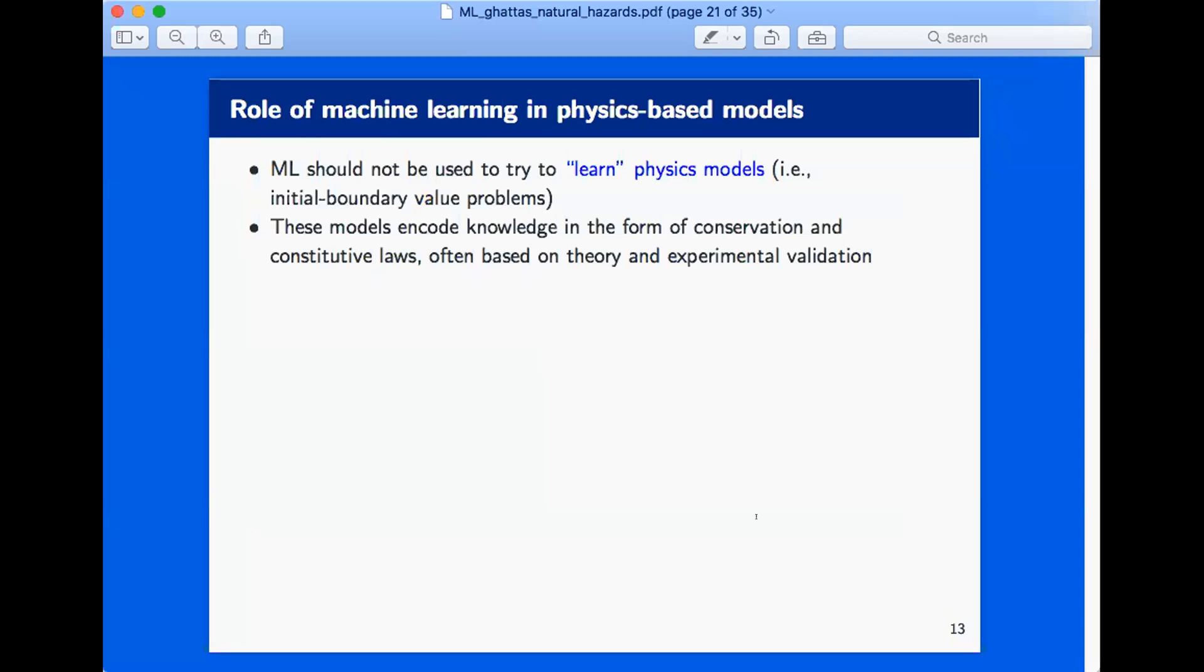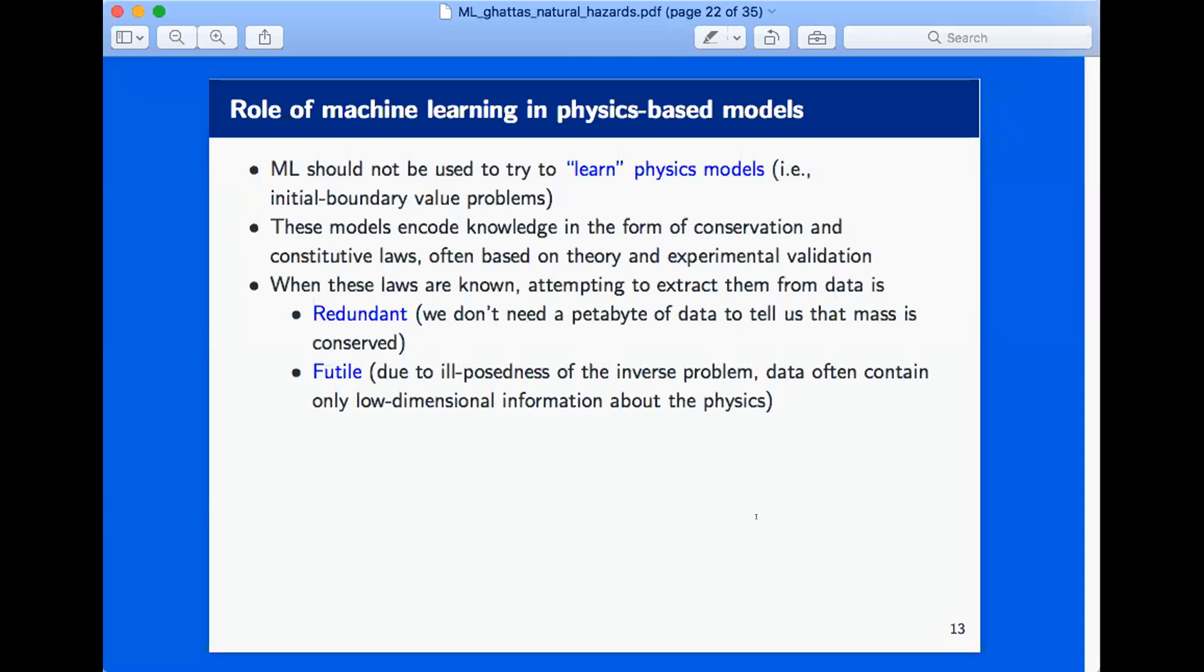So let me just end with some editorial comments about the role of machine learning in physics-based models. I don't think we should use machine learning to learn physics models. And Devika made the point. I mean, she said if you know F equals ma, why try to discover it? The usual line that I say is we don't need a petabyte of data to tell us that mass is conserved. But why? Because these models encode knowledge. I mean, for anyone who isn't convinced—I'm sure you're all convinced of this—models encode knowledge in the form of conservation and constitutive laws, often based on theory and experimental validation. Sometimes just theory. When the laws are known, attempting to extract them from data is redundant. And it's also futile because of the ill-posedness. In other words, to go from the data back to the model, there's a fundamental—in many physical systems, in any kind of dissipated physical system—you can't actually do that unless you bring in additional prior knowledge.